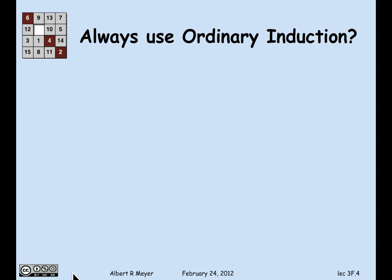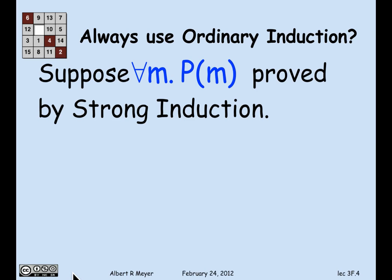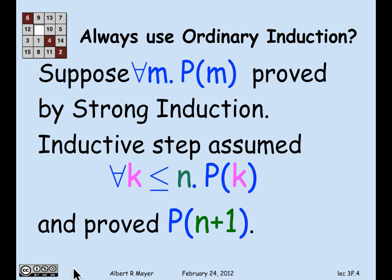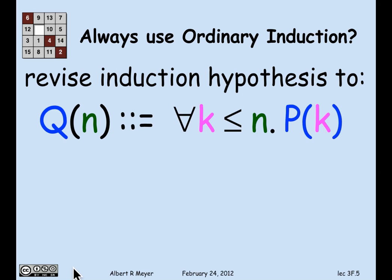There's another perspective: why not always use ordinary induction? How do you replace strong induction with ordinary induction? It's easy. Suppose you've proved for all m, P(m) using strong induction. The base case is the same for both. In the strong inductive step, you assume P(k) for all k less than or equal to n, and using those hypotheses you prove P(n+1). To convert to ordinary induction, just let Q(n) be the statement that for all k less than or equal to n, P(k).